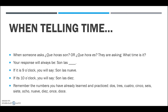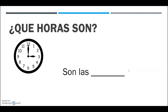When someone asks '¿qué hora son?' or '¿qué hora es?', your response will always be 'son las' followed by the time. If it's nine o'clock you say 'son las nueve'; if it's ten o'clock, 'son las diez'. The numbers you've already memorized — dos, tres, cuatro, cinco, seis, siete, ocho, nueve, diez, once, and doce — will move you around the clock.